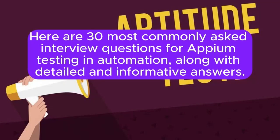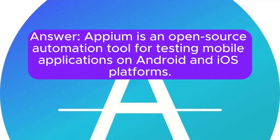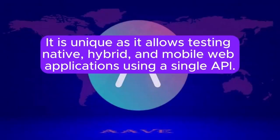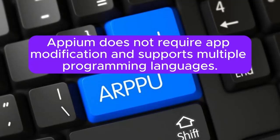Here are 30 most commonly asked interview questions for Appium testing in automation, along with detailed and informative answers. 1. What is Appium, and how does it differ from other mobile automation tools? Appium is an open-source automation tool for testing mobile applications on Android and iOS platforms. It is unique as it allows testing native, hybrid, and mobile web applications using a single API. Appium does not require app modification and supports multiple programming languages.